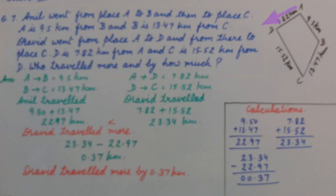Drawer went from place A to D and from there to place C. D is 7.82 km from A and C is 15.52 km from D. Who travelled more and by how much?